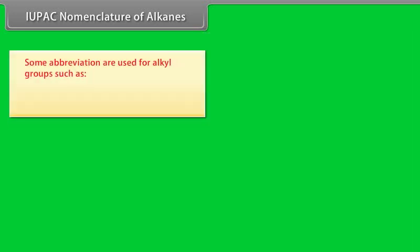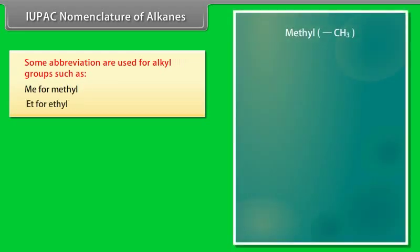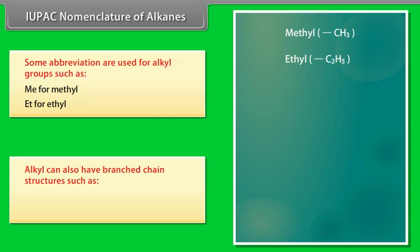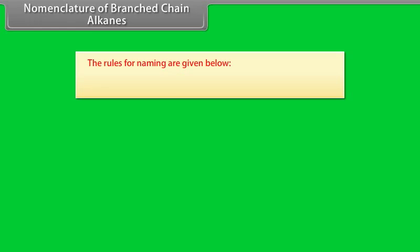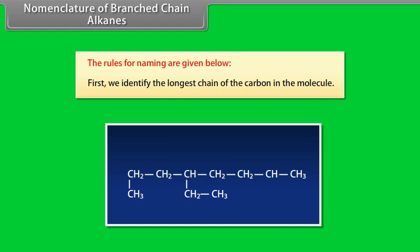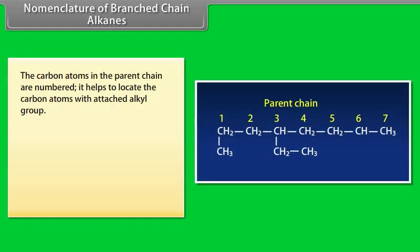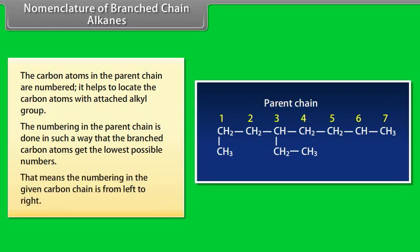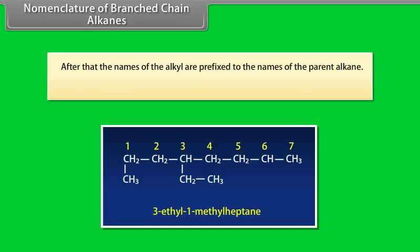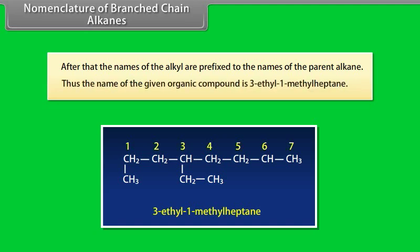Some abbreviations used for alkyl groups are Me for methyl and Et for ethyl. Alkyl groups can also have branched chain structures such as isopropyl and tert-butyl. The rules for naming are: first, identify the longest carbon chain in the molecule; number the carbon atoms in the parent chain to locate those with attached alkyl groups; numbering is done so that branched carbon atoms get the lowest possible numbers. For example, the name of a given organic compound is 3-ethyl-1-methyl-heptane.